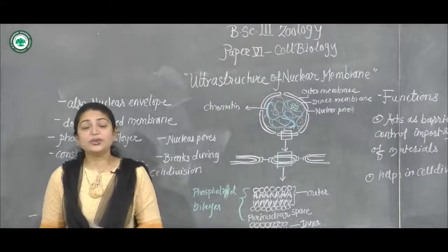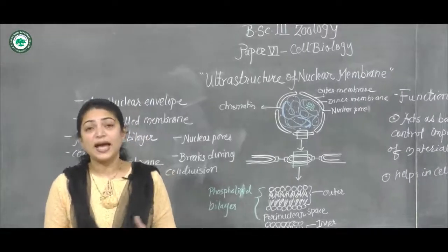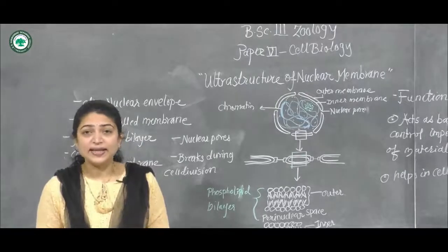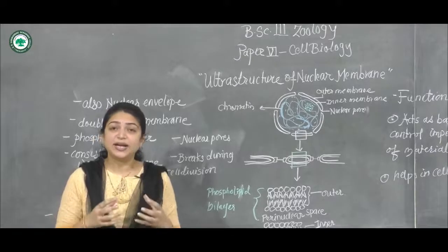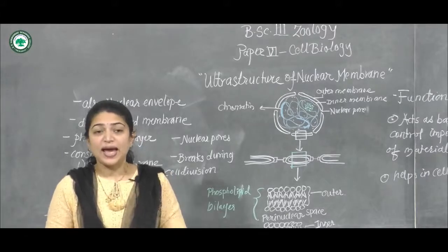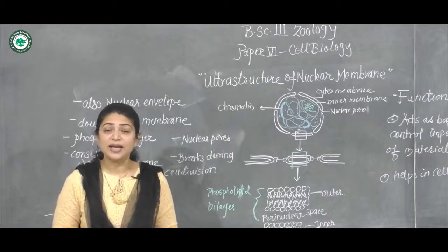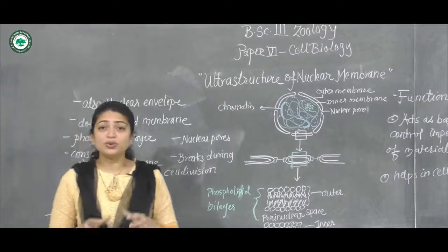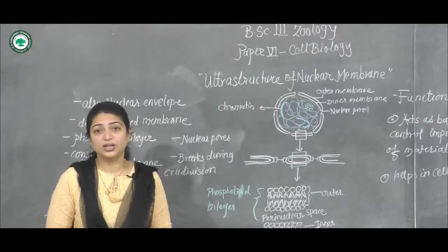All the eukaryotic cells that are found in animals, plants, protista and fungi contain a control center where the DNA — the genetic material — is stored and protected in the nucleus. That protection is given by a double-layered membrane called the nuclear membrane. Today we are going to study in detail about the ultra structure of the nuclear membrane and how it is important to the nucleus.